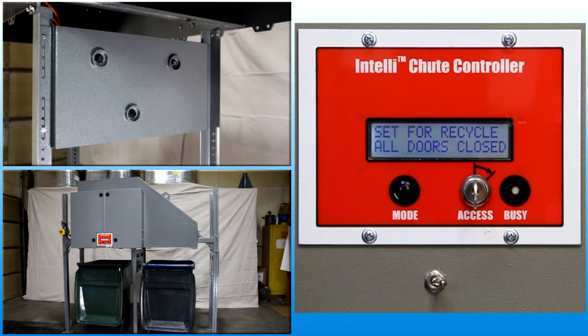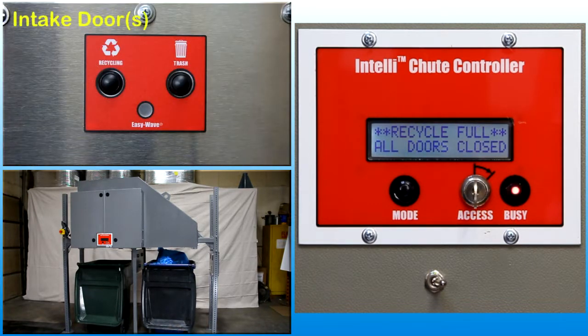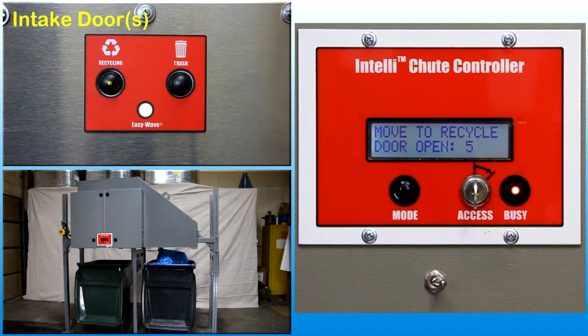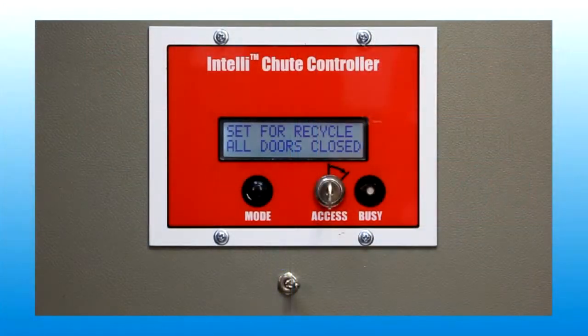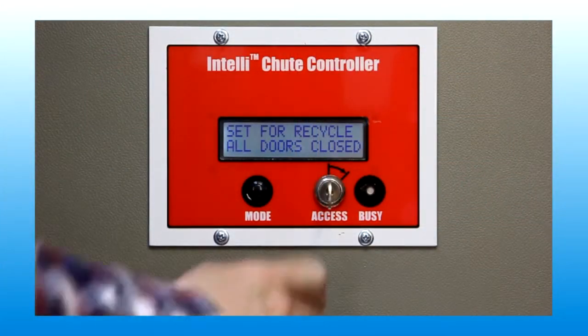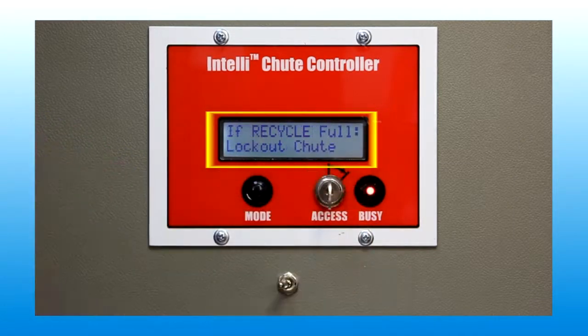Alternatively, when a cart full condition is detected, the control system will generate a cart full warning message, but diverts all waste to the garbage side instead of locking out the chute system. The choice between these two options is determined by configuration parameter settings within the control system setup.